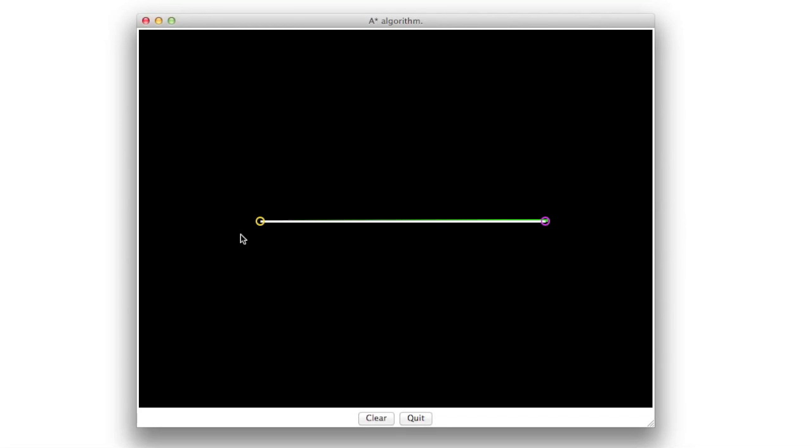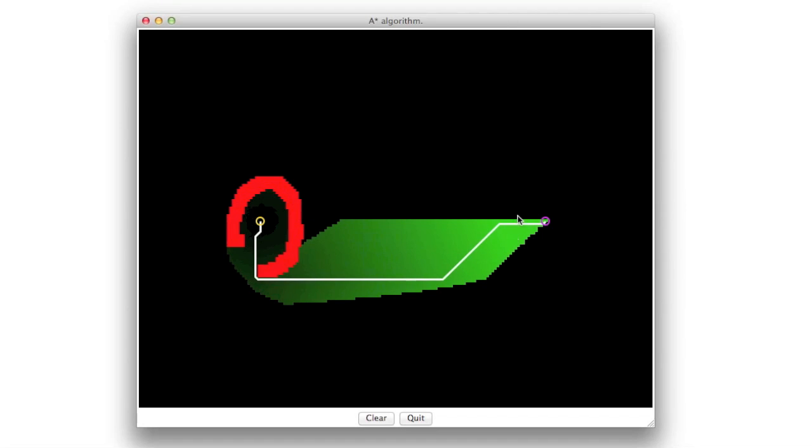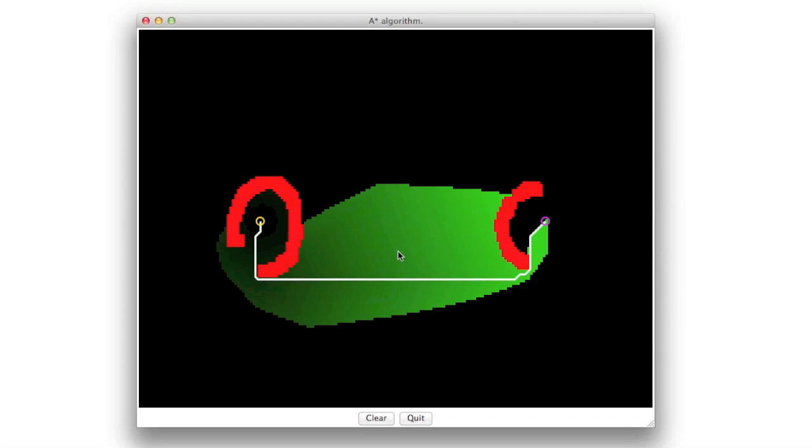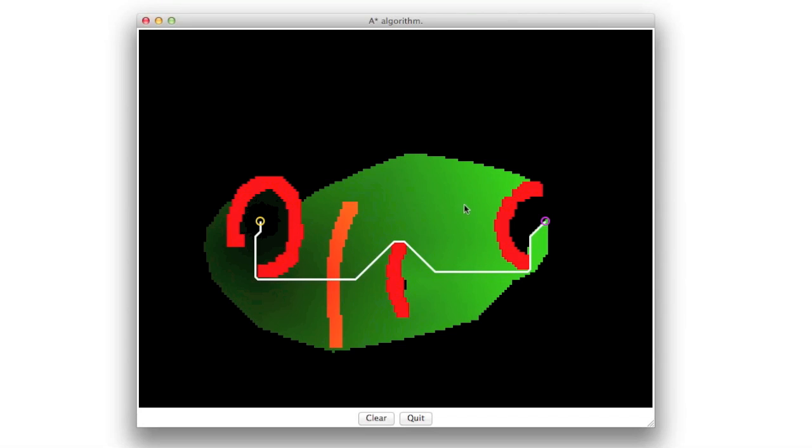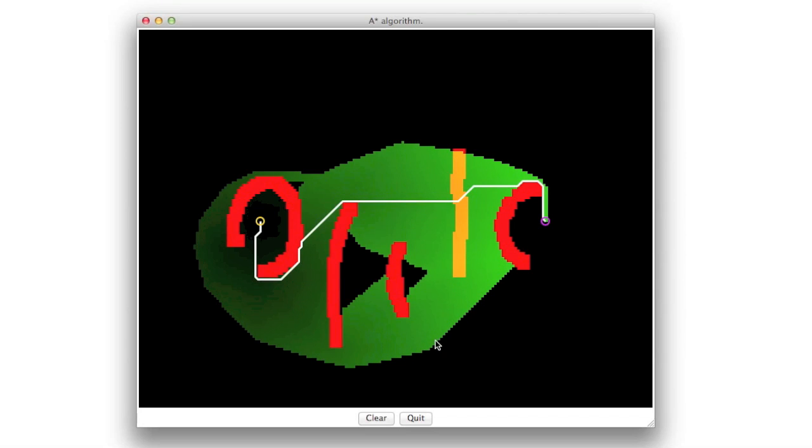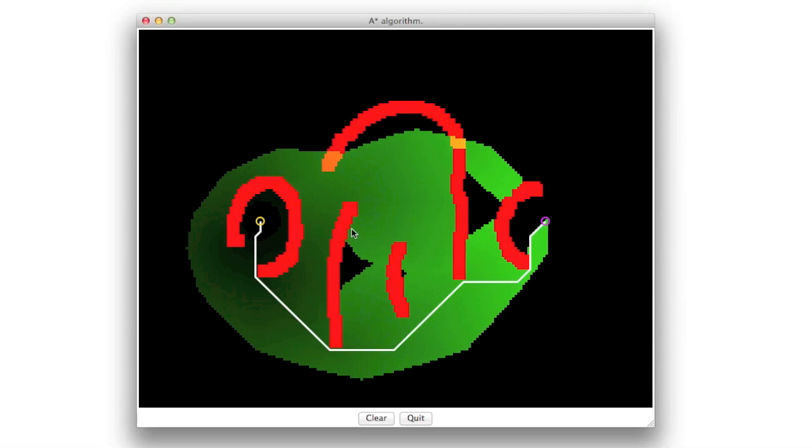So overall, you see now that the algorithm is much faster and you can use it at interactive speeds on a normal computer. So you can think of complicated